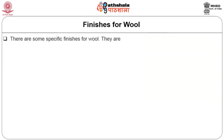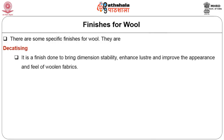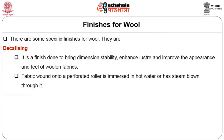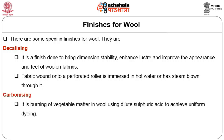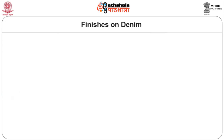Finishes specific to wool include decatizing — done to bring dimensional stability, enhance lustre and improve the appearance and feel of woolen fabrics; fabric wound on perforated rollers is immersed in hot water or has steam blown through it. Carbonizing is the burning of vegetable matter in wool using dilute sulphuric acid to achieve uniform dyeing.